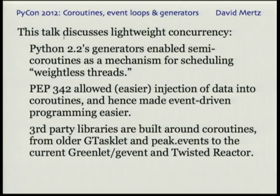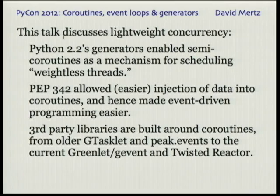The title is about coroutines, event loops, and generators, and in particular, I'm going to get into this topic of how to create weightless threads or green threads that are based around Python generators that are extremely lightweight. There's no switching time and context overhead, and this is actually something that I wrote about embarrassingly long ago when generators were first introduced, and as a result, there were some improvements to the structure of Python generators that made it easier to work with the same sort of thing. But before I get to that, I'm going to talk about some stuff about concurrency in a more general way and why these kind of weightless threads and other generator-based mechanisms still make sense.